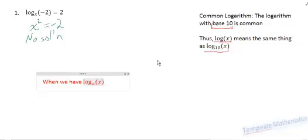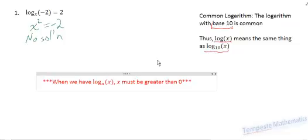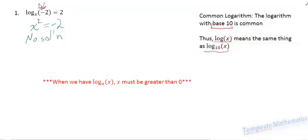so when we have log base a of x, whatever a is, we need to know that x must be greater than 0. If x is not greater than 0, or if x is equal to 0, then we won't have a solution. So x must be greater than 0 for us to have a solution. Just a really important note that you should make sure to remember, because it can save us a lot of time later on. If we see something like this, where we see that x value is negative, right away we can tell that there is no solution. Okay, that is example one.